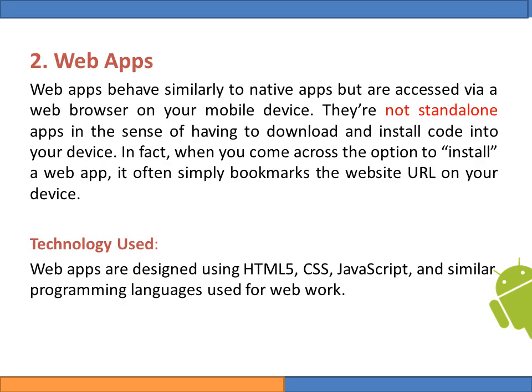The second type is web applications. Web applications behave similarly to native applications but exist via a web browser on your mobile device. They are not standalone applications in the sense that you do not download and install code onto your device — meaning they are not working offline. When you come across the option to install a web application, it often simply bookmarks the website URL on your device. Technologies used for web applications include HTML5, CSS, JavaScript, and similar programming languages used for web development.